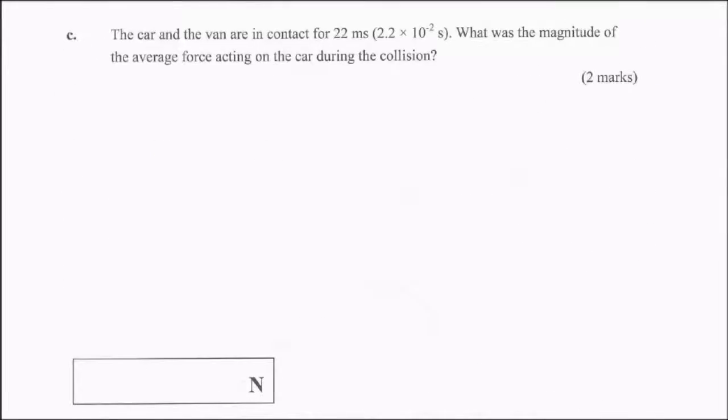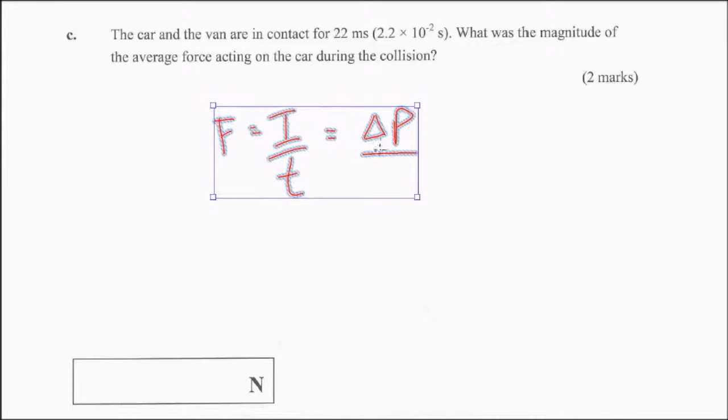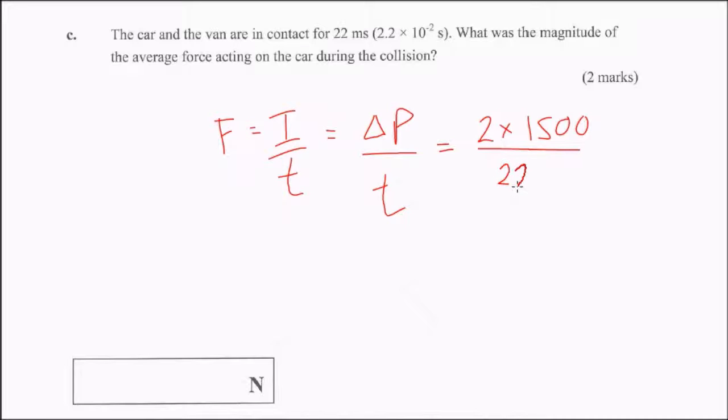The car and the van are in contact for 22 milliseconds. What's the magnitude of the average force? So, this is one of those questions where we're thinking about force equals impulse over time. We remember that the impulse is the change in momentum. We do actually know that for the van, because the van started off with a velocity of zero. After the collision, it had a velocity of two. So, it's change in momentum is 2 times 1,500, or 3,000. And we're dividing that by 22 milliseconds. And we get 140,000 newtons. And you could write 140 kilonewtons.